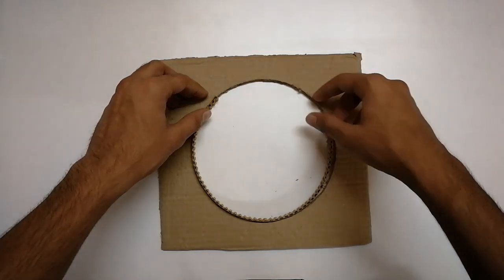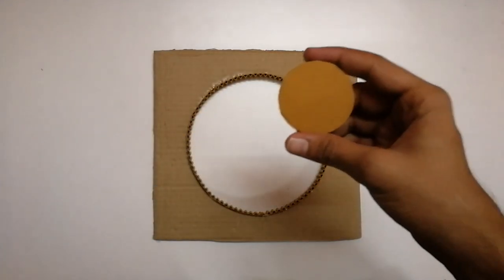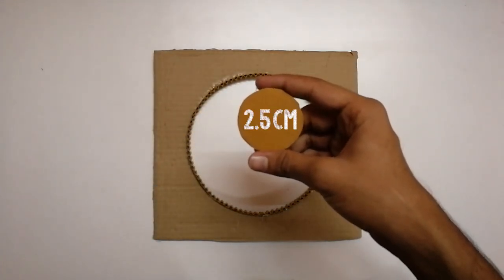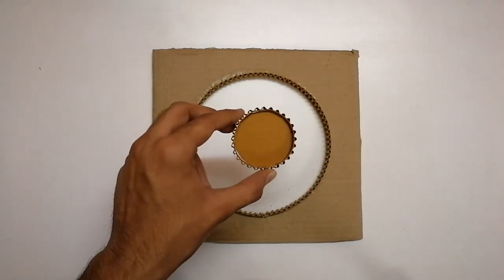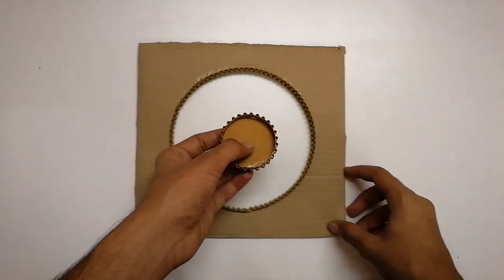Now cut another circle of radius 2.5 centimeters and cover the outer side with the cardboard strip just like the previous one. Make a hole using a thumb pin or anything sharp anywhere on the circle - different points will give you different patterns.